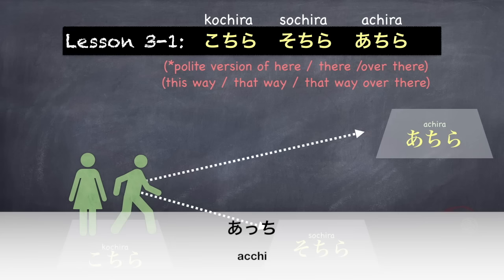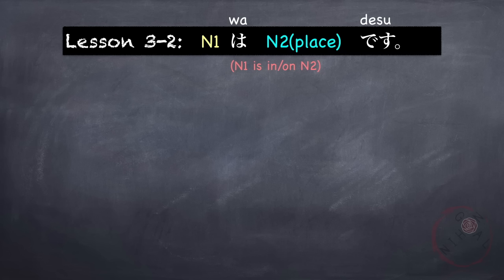Next is the grammar pattern N1 wa N2 (place) desu. If you remember, we learned this pattern in the very first lesson. This pattern explains where a place, a thing, or a person is or is located. N1 is in or at N2.